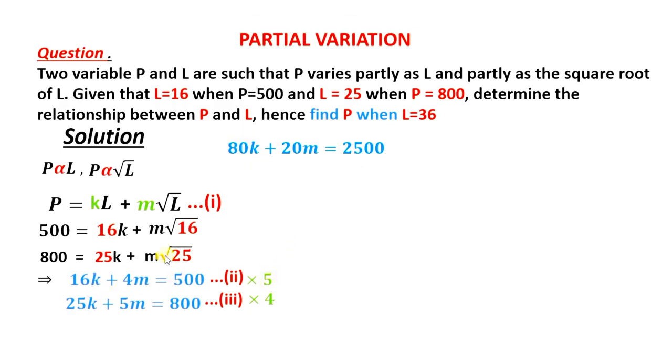And 5 times 4M is 20M, and 5 times 500 is 2500. And then for the third equation we have 4 times 25K, that gives us 100K, 4 times 5M, 20M, and 4 times 800 is 3200.